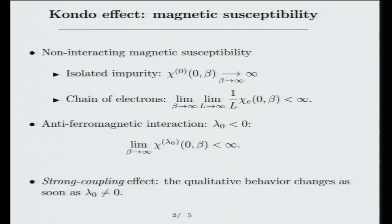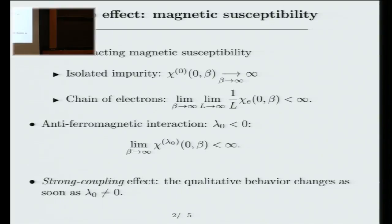The Kondo effect says that if the interaction lambda 0 is negative, it can be arbitrarily close to 0 but as long as it's negative, then the magnetic susceptibility of the impurity in the interacting case is finite in the 0 temperature limit. So this is what I call a strong coupling effect. What do I mean by a strong coupling effect? By turning on an interaction, even an extremely small interaction, I'm changing the qualitative properties of my system. I'm going from a situation in which my impurity is infinitely susceptible at 0 temperature to a situation where it's finitely susceptible at 0 temperature. I get this for any value of the interaction provided it's negative. It could be minus 10 to the minus 31, wouldn't matter.